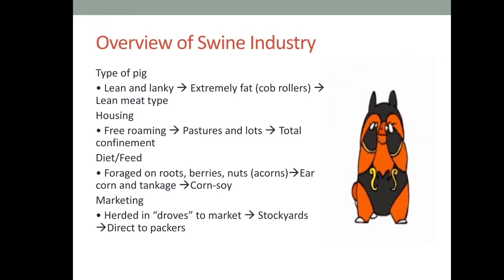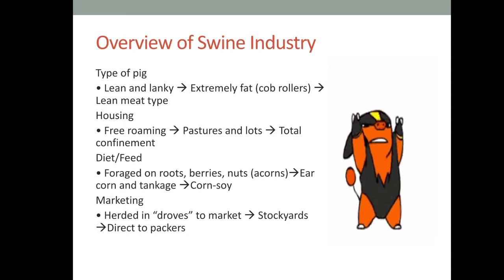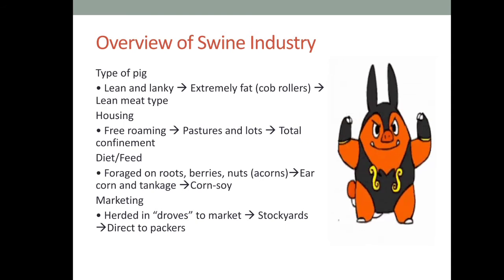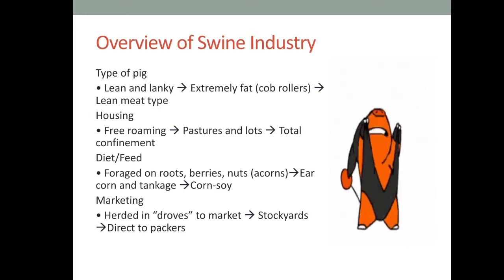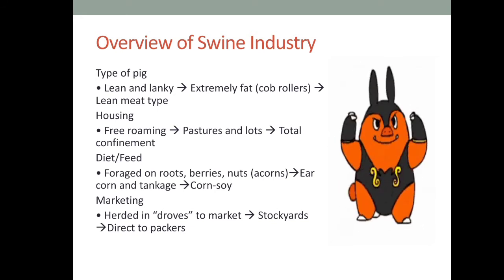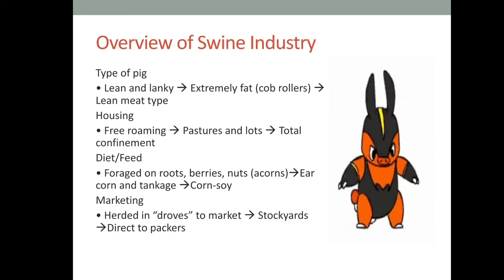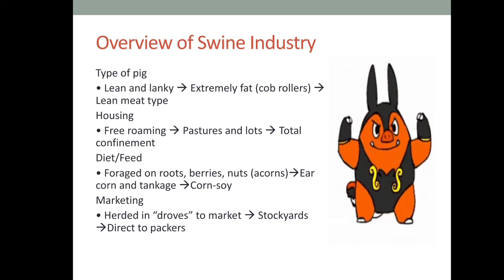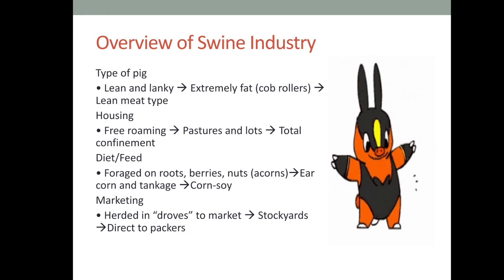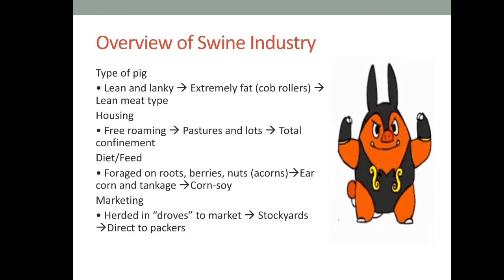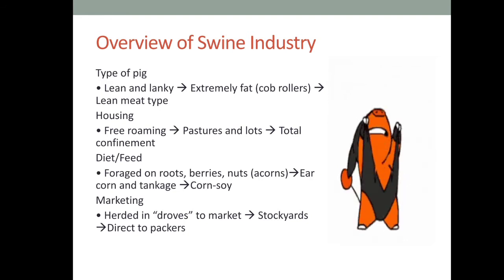In terms of diet and feed, before they foraged on roots, berries, and nuts, then fed on ear corn and tankage, and finally into corn-soy feed, which is very nutritious and high in protein, good for improving the quality of meat. In marketing, swines were herded in groves as a market, then to stockyards, and finally now the meat and swines go direct to butchers.